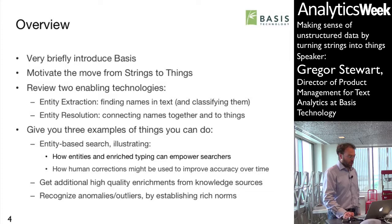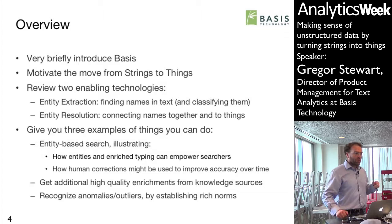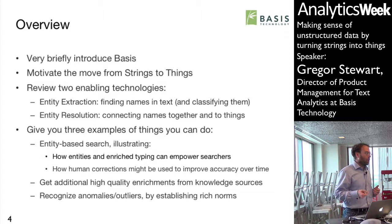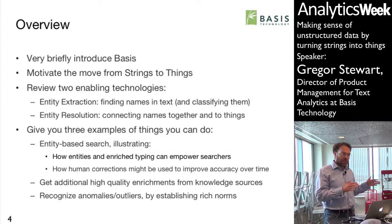The example also illustrates how correction of those decisions might help improve accuracy over time. The latter two examples are really speculations, but they're well grounded in practice — particularly in information retrieval. Getting additional high-quality enrichments from knowledge sources, either from the nodes you're retrieving or from their nearby neighborhood, and using that nearby neighborhood to recognize anomalies by establishing a rich norm.